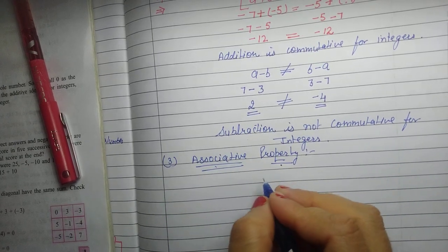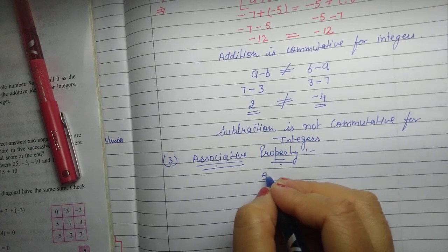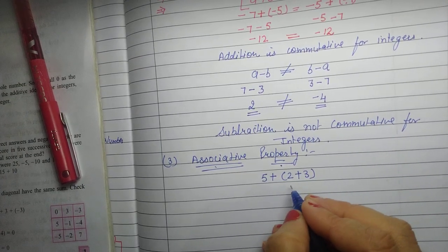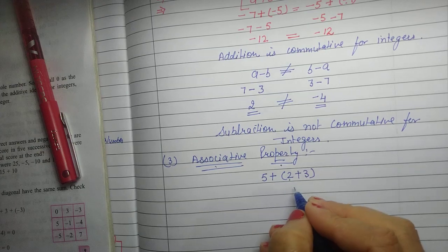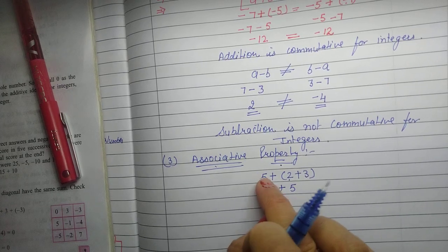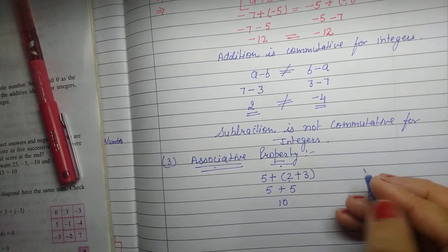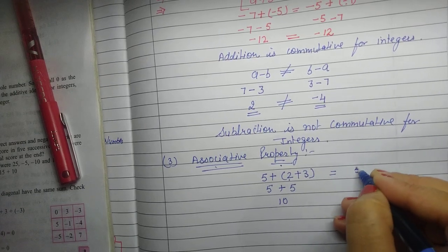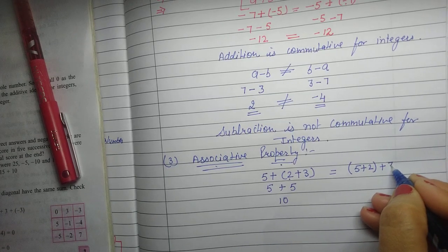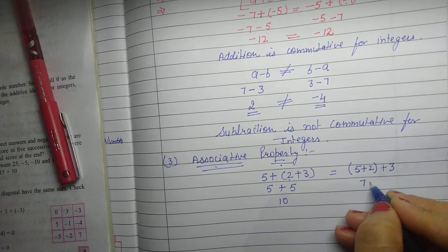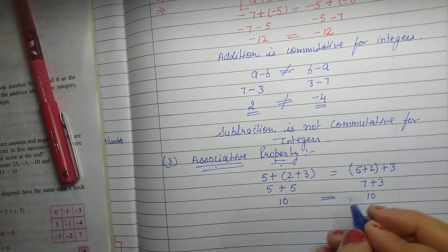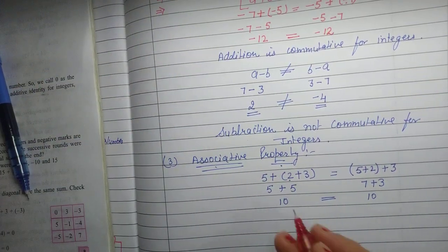This property applies to addition. For example, 5 plus (2 plus 3): solving the bracket first, 2 plus 3 is 5, then plus 5 gives 10. Now changing the group: (5 plus 2) plus 3 — 5 plus 2 is 7, and 7 plus 3 is also 10. Both results are the same, so addition is associative for integers.